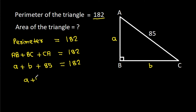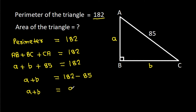So, A plus B equals 182 minus 85, which gives A plus B equals 97.